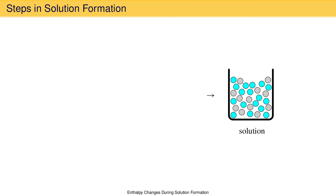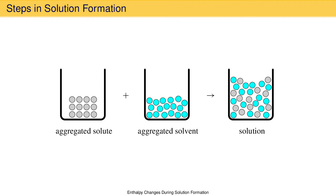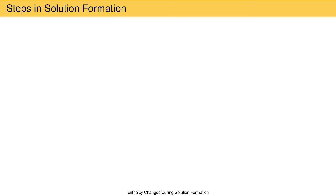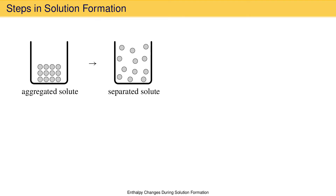To form a solution we need to combine the aggregated solute with the aggregated solvent, but we are not going to do this in a single step. Instead, we will do this in a sequence of three steps that add up to the overall process. First, we take the aggregated solute particles and separate them, breaking all solute-solute interactions. This process is always endothermic because breaking the interactions that hold particles to each other always requires an input of energy. The symbol used for this enthalpy change is delta H subscript solute. It is always positive; the more strongly the particles of the solute are held to each other, the larger the value of delta H solute.